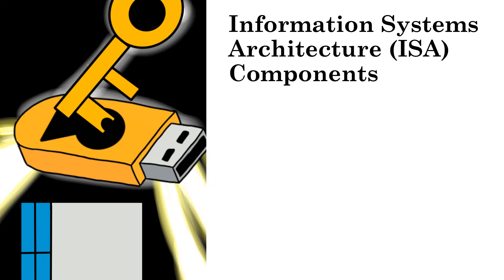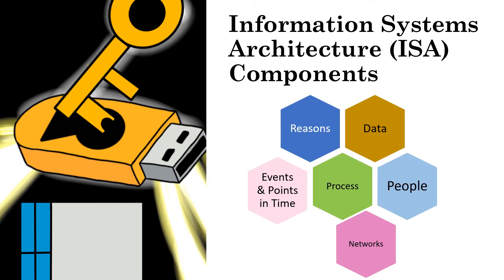The information system architecture components consist of the following. We have the data that can be represented at the general level, followed by the processes that manipulate data, which can be represented by data flow diagrams, algorithms, object models with methods, or other notations.